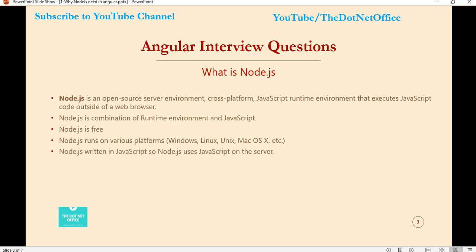So let's see what Node.js is. Node.js is basically a free, open-source server environment. We can download it and use it in our application. Node.js is a cross-platform JavaScript runtime environment that executes JavaScript code outside of a web browser. It is written in JavaScript, which helps applications to run on the browser since browsers understand JavaScript.